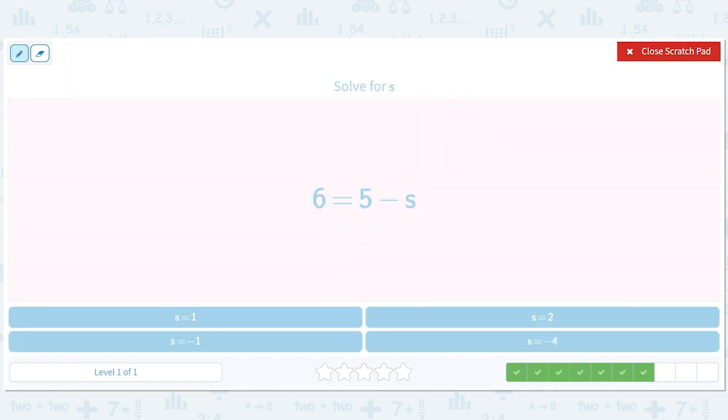How about this? Well, let us add s to both sides. Being lazy, I guess I should. So now we get s plus 6 equals 5. Now we subtract 6 from both sides. We get s equals negative 1.